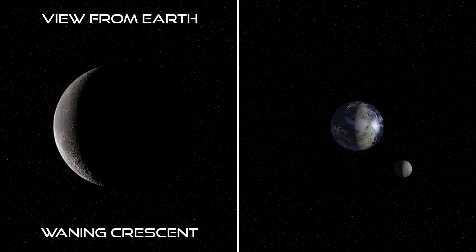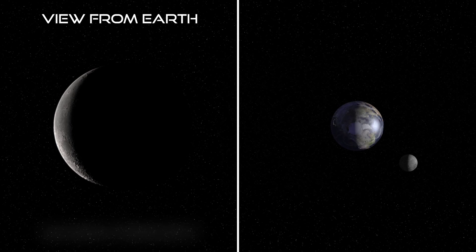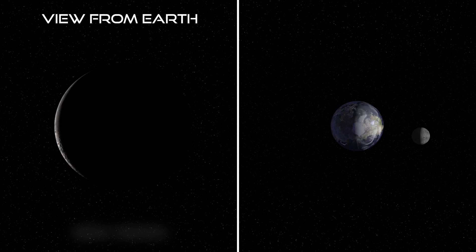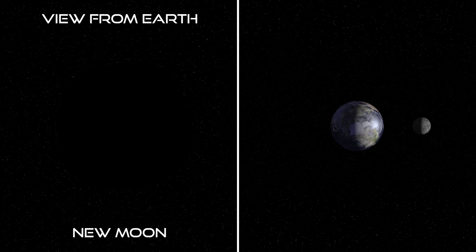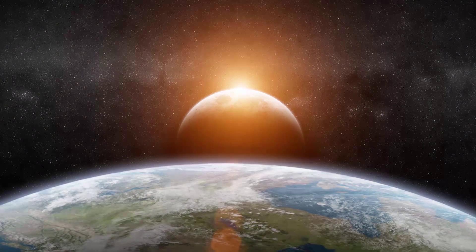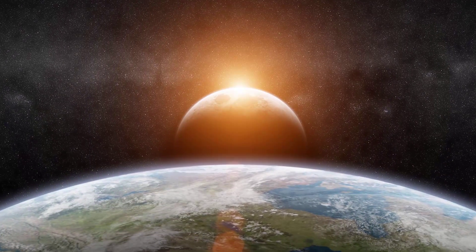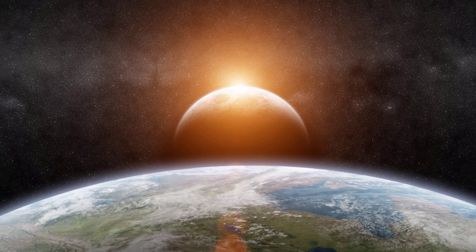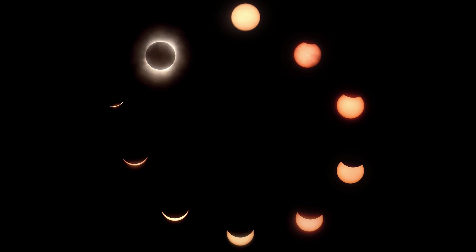We see less and less of the Moon and the waning crescent gets smaller and smaller. Finally, we are back at the starting point of our model — back to the New Moon. Two interesting events can happen at New Moon and Full Moon. At New Moon and only at New Moon, we might see an eclipse of the Sun.